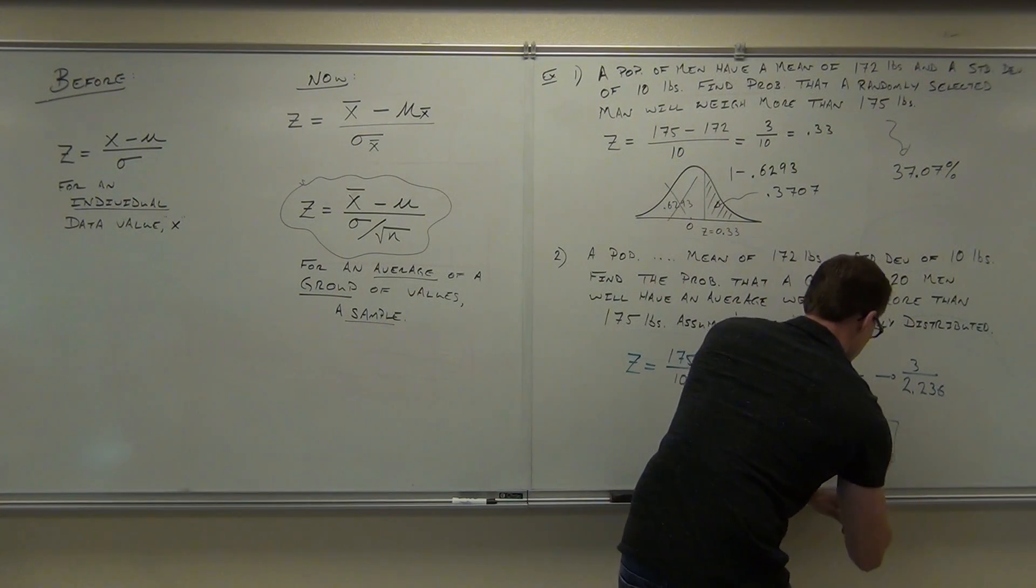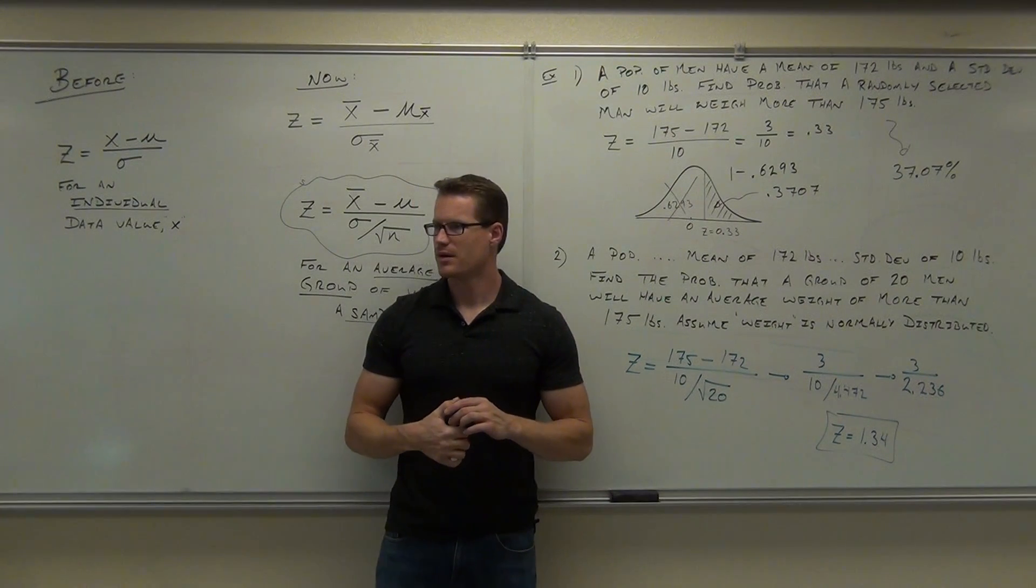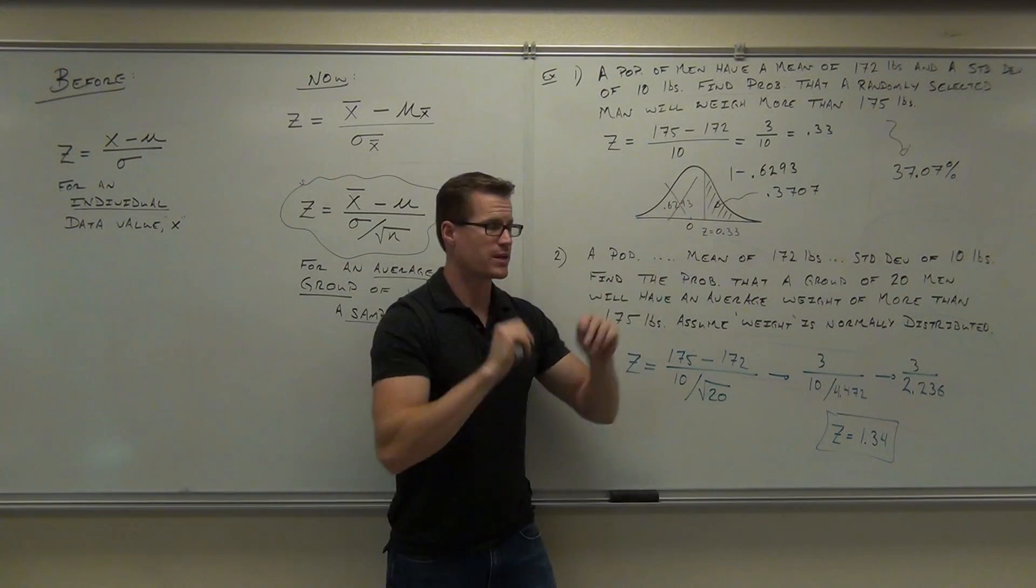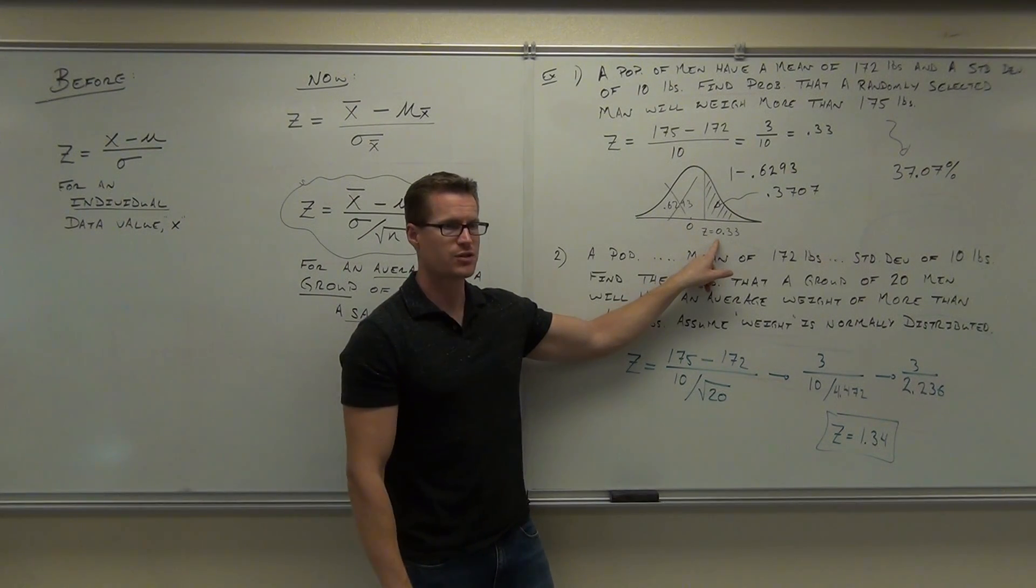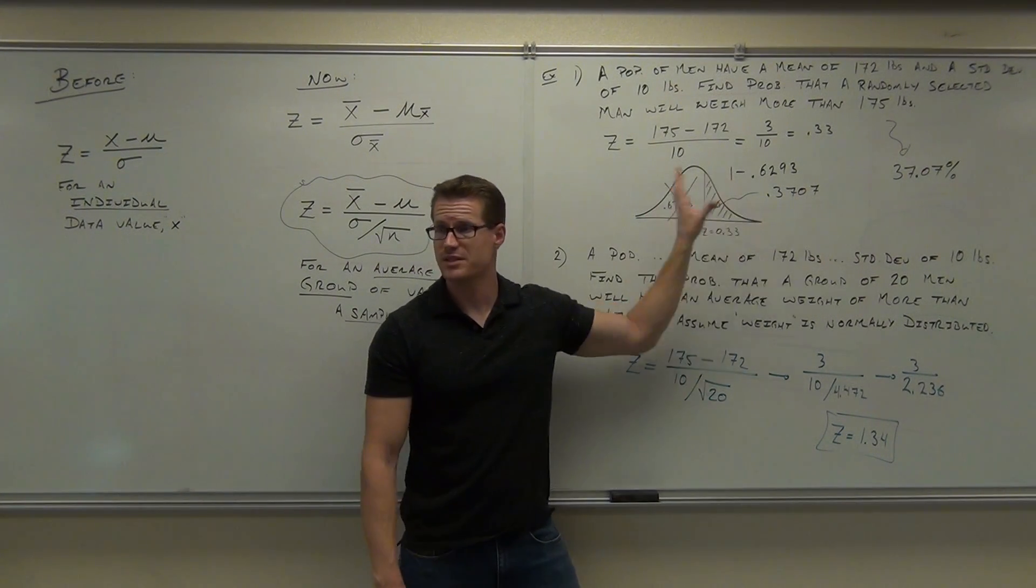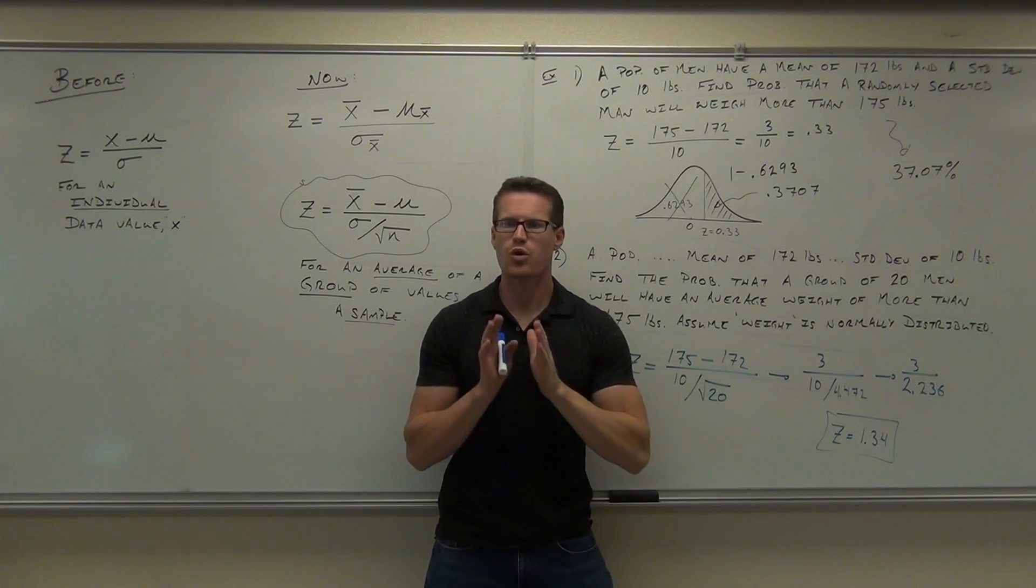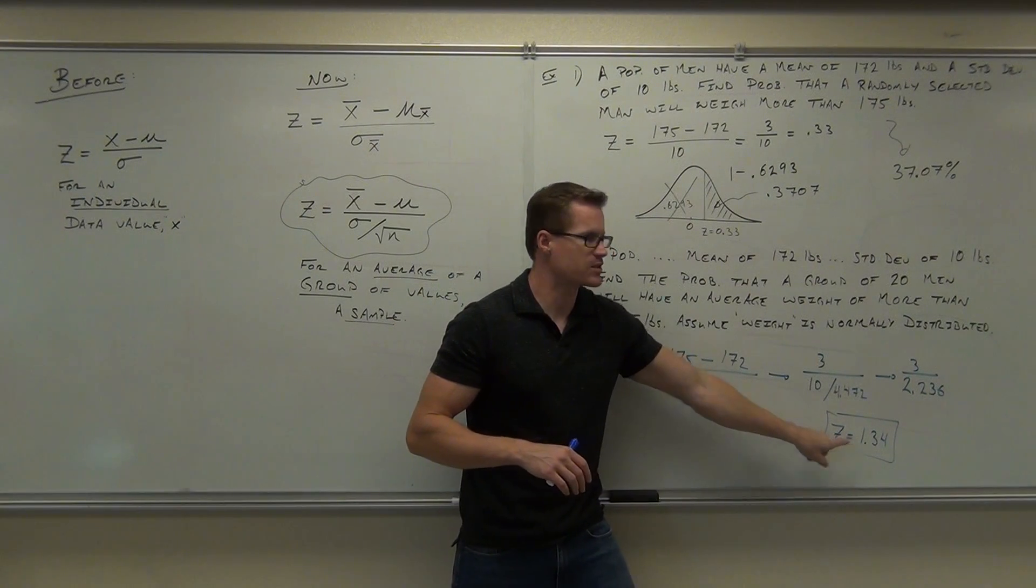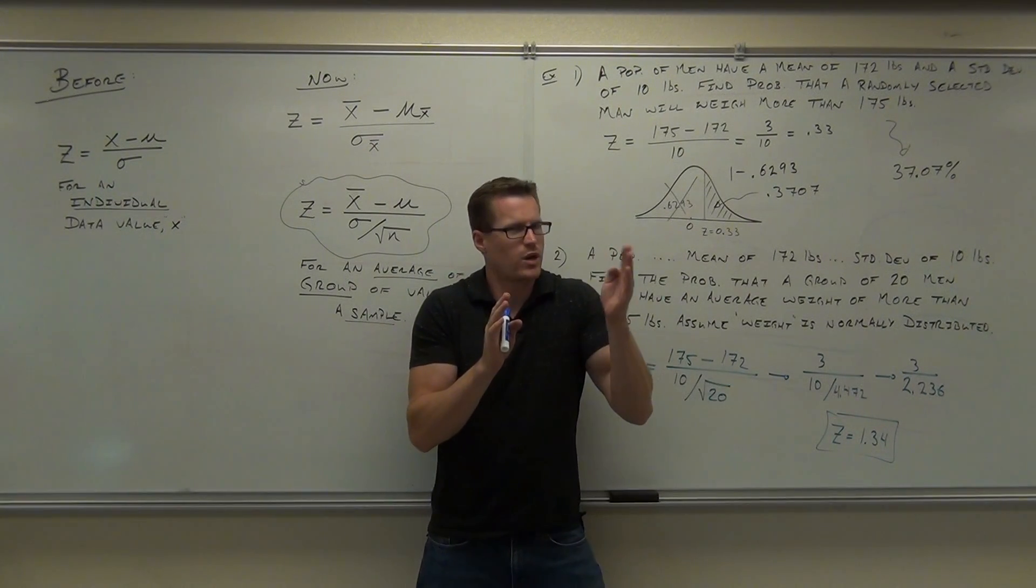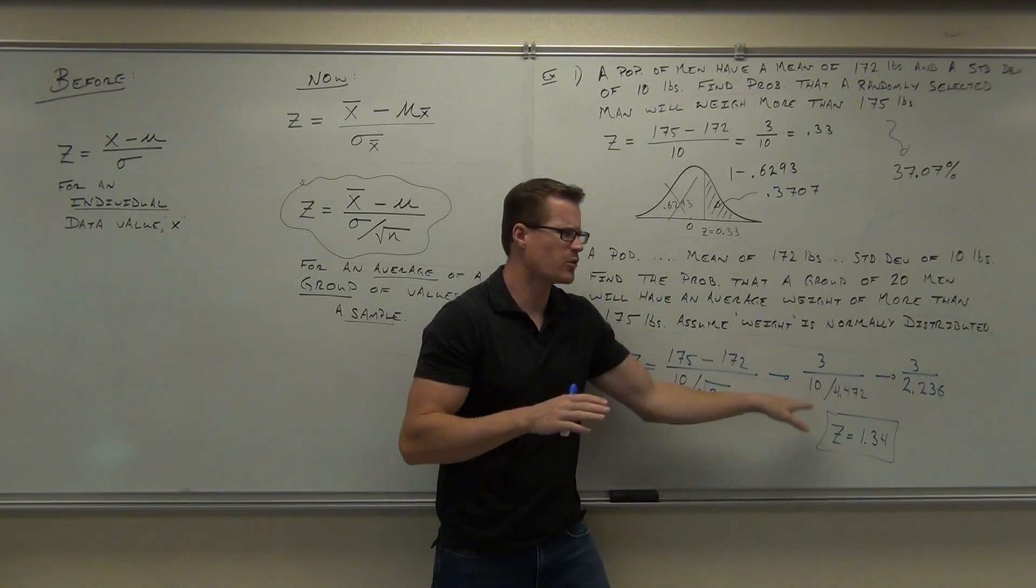That one you can round because it's the z-score. Round to two decimal places. Did the z-score end up being the same? Notice how this z-score was 0.33. That was pretty close to the average. This z-score, since we're talking about a group, it's much more rare to have something away from the mean. It says that a group is further away from what it should be. This is a rare group of men.